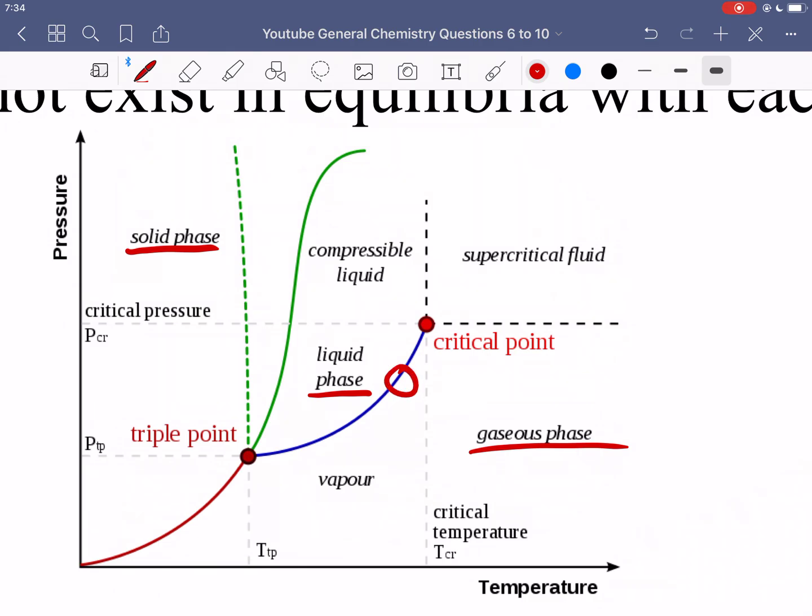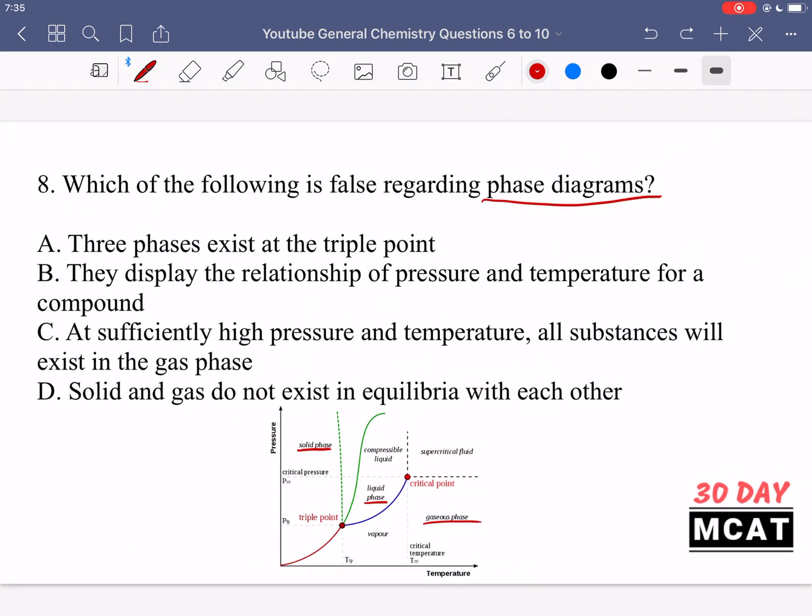So under these conditions, at a certain pressure and temperature, water will exist as one of three forms: solid, liquid, or gaseous. But then if we are at the line between the two phases, we are at equilibrium. If we were at this point, we would be at equilibrium between the liquid phase and the gaseous phase. Then over here at the top right, the supercritical fluid, it's not really either gaseous or liquid. The triple point is the point at which you're at equilibrium between all three phases.